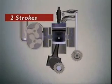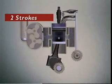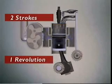All five events occur in just two strokes. How many revolutions does the crankshaft do in one engine cycle? One revolution per cycle.